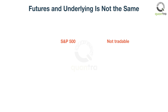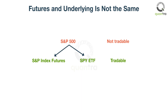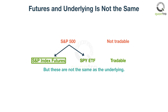That statement may surprise you, but stop to think about it a moment. You simply cannot trade an index. You can trade various products and derivatives based on the index, but the index is not a security. You can replicate the price profile of the index quite closely, but not exactly. If you trade S&P index futures or the SPY ETF, you are trading products designed to closely follow the index, but they will never be the same.